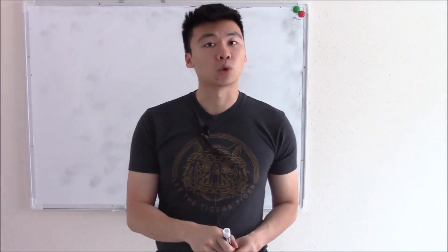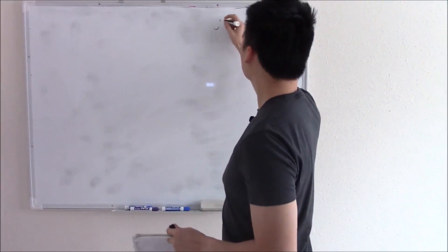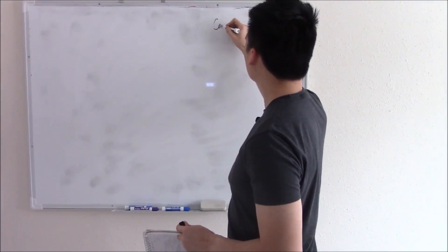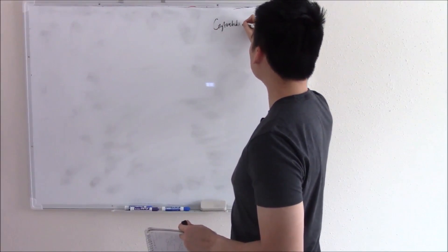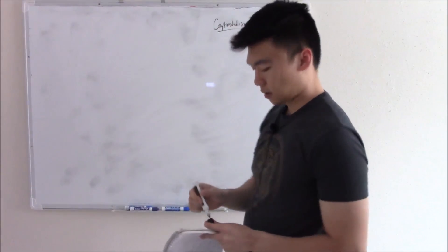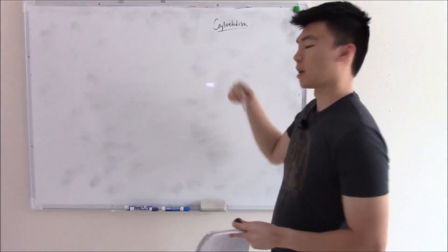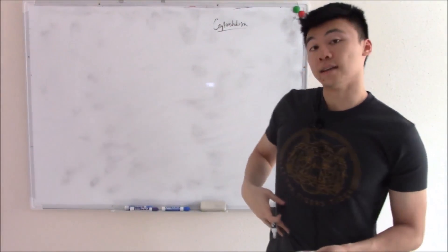And if they fail to descend, we call that cryptorchidism. So cryptorchidism. The most common congenital abnormality of the testes, they just stay in your abdomen.